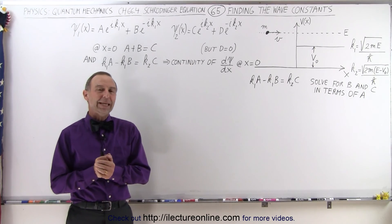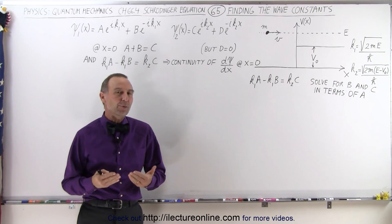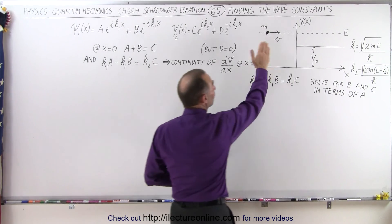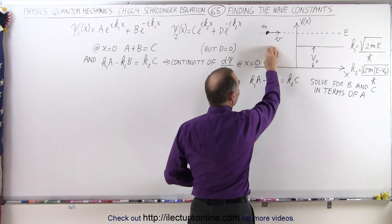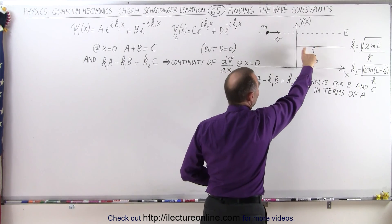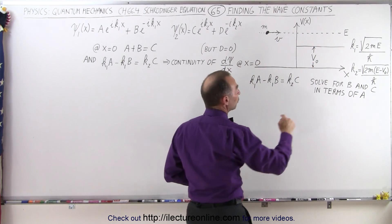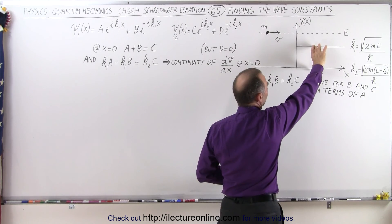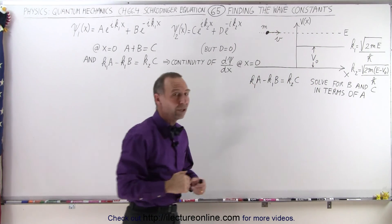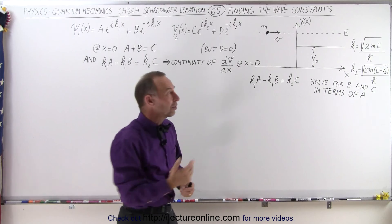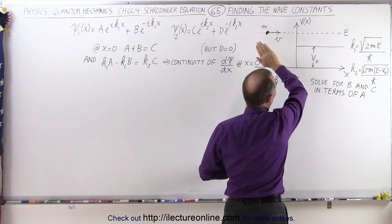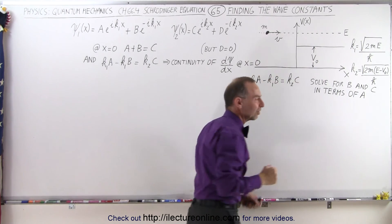Welcome to our lecture online. In a previous video, we found the two equations describing the wave function on both sides of the boundary — on the left side where we don't have a potential barrier, and on the right side where we do. In this case, our potential barrier is smaller than the energy that the particle has, with the result that part of the particles will be reflected and part of the particles will be transmitted.